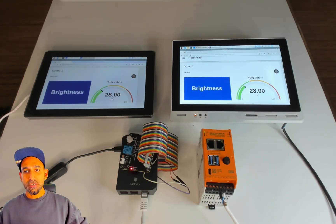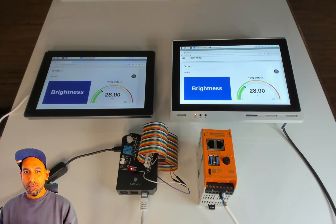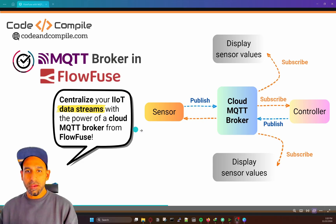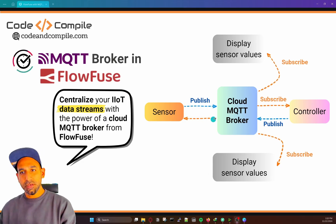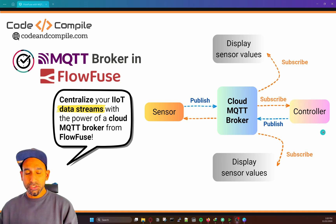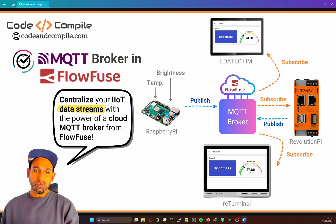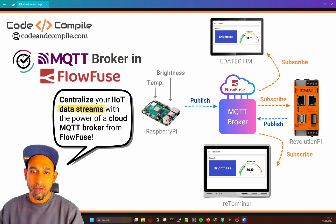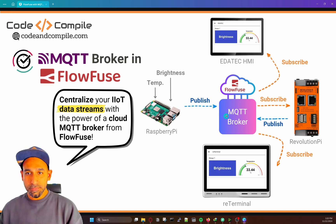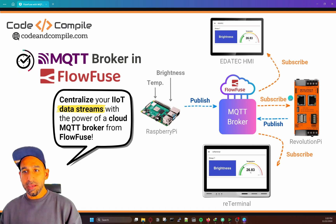This is one of the use cases I'm going to talk about — how this is happening using FlowFuse's MQTT broker. We have a sensor publishing data, and the controller is allowed to subscribe and publish, whereas display values are only subscribing to the data. On the next slide you can see I have a Raspberry Pi with temperature and brightness values and a sensor connected, which is just publishing the data to the broker.